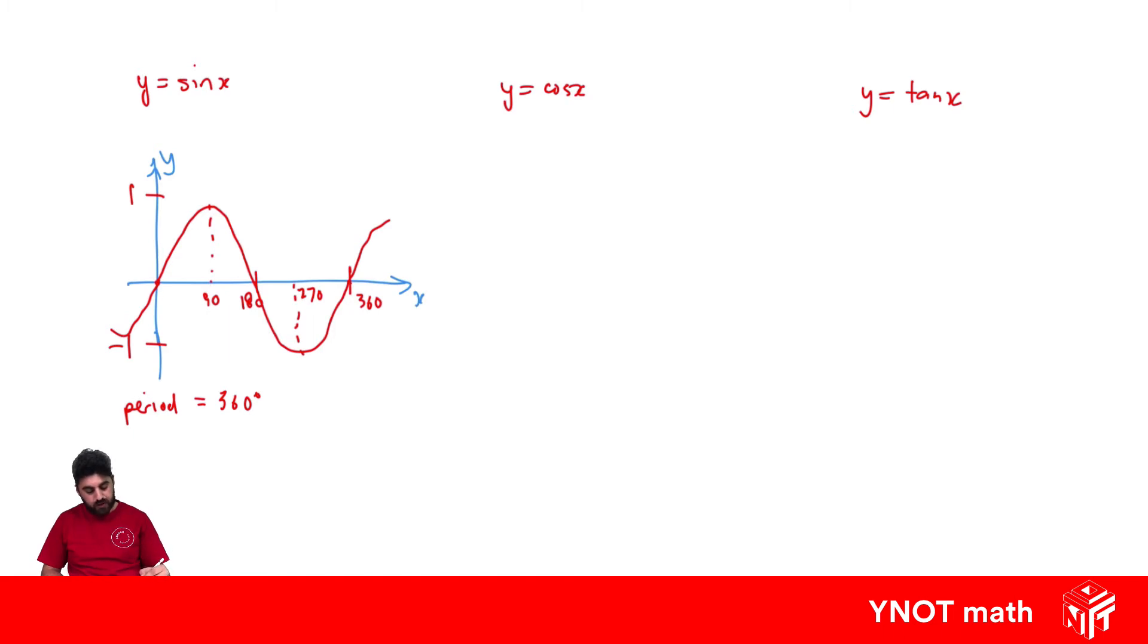The graph is between 1 and minus 1. The length from the middle to the highest point or the middle to the lowest point is both 1. We call that the amplitude. This has an amplitude of 1.